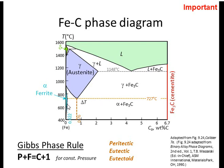The iron carbon phase diagram has three kinds of phases: the alpha ferrite phase, which is a BCC solid solution; the gamma austenite phase, which is an FCC solid solution; and the delta phase, which is again a BCC solid solution. In our area of interest — the steel region — we see three different phases: alpha ferrite, gamma austenite, and delta.